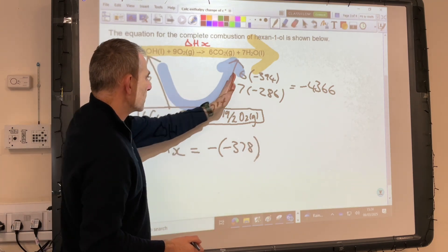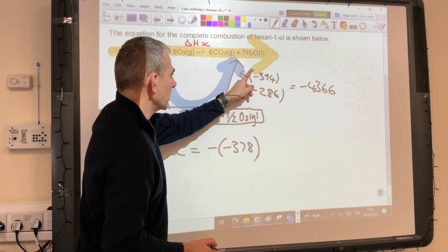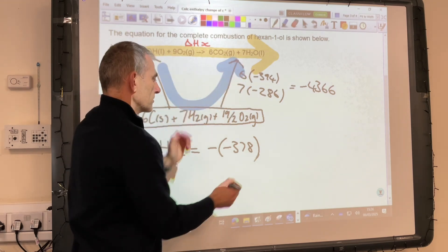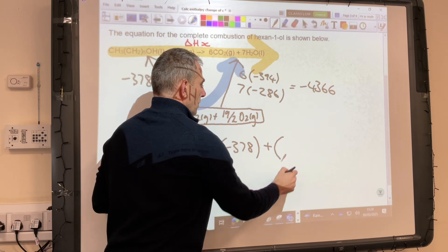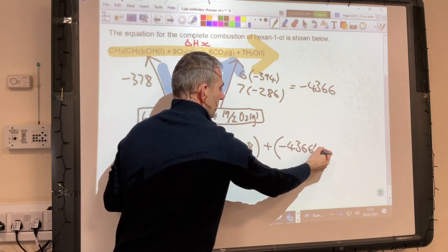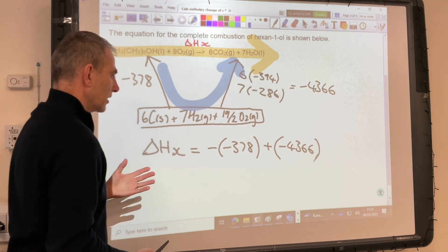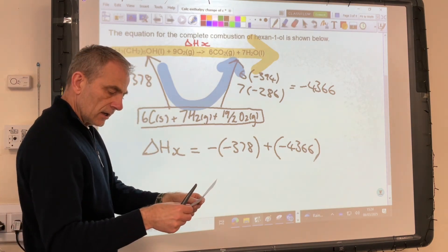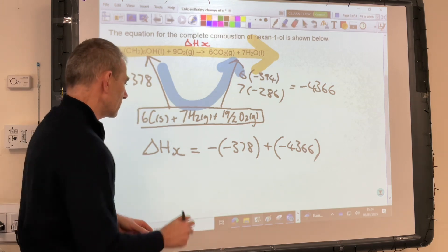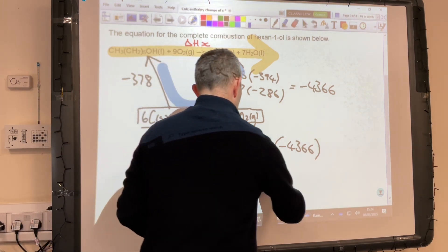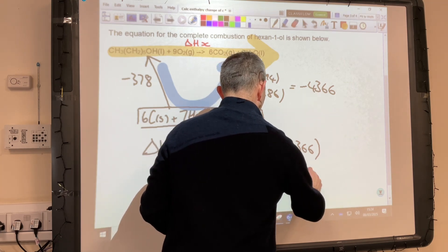Then if we move on to the next enthalpy change, so these combined ones, you can see this arrow is following the route. So all we do is add that. So we're adding minus 4366. And then all we need to do is put that in our calculator. And I've got the answer here. It's minus 3988 kilojoules per mole.